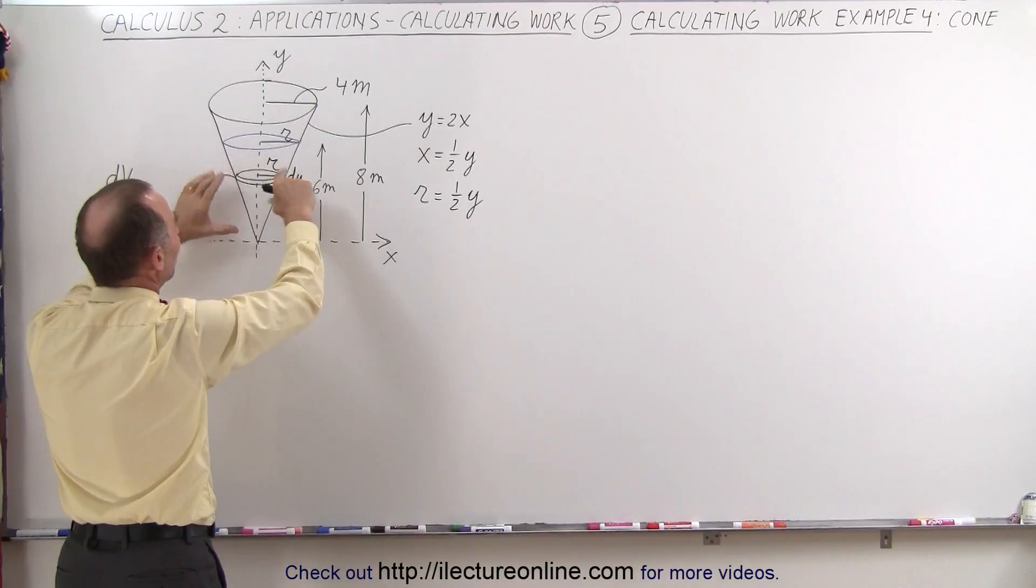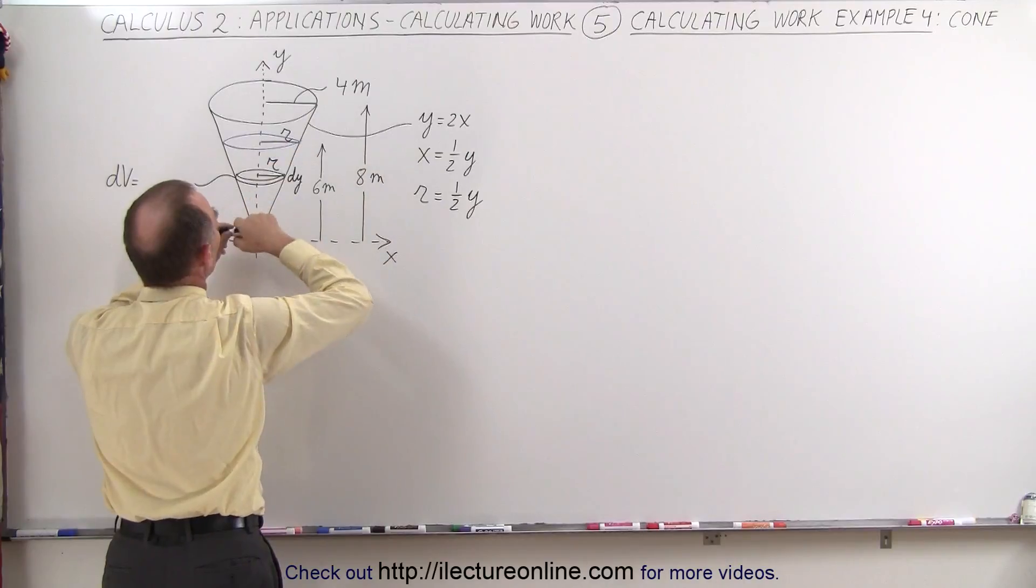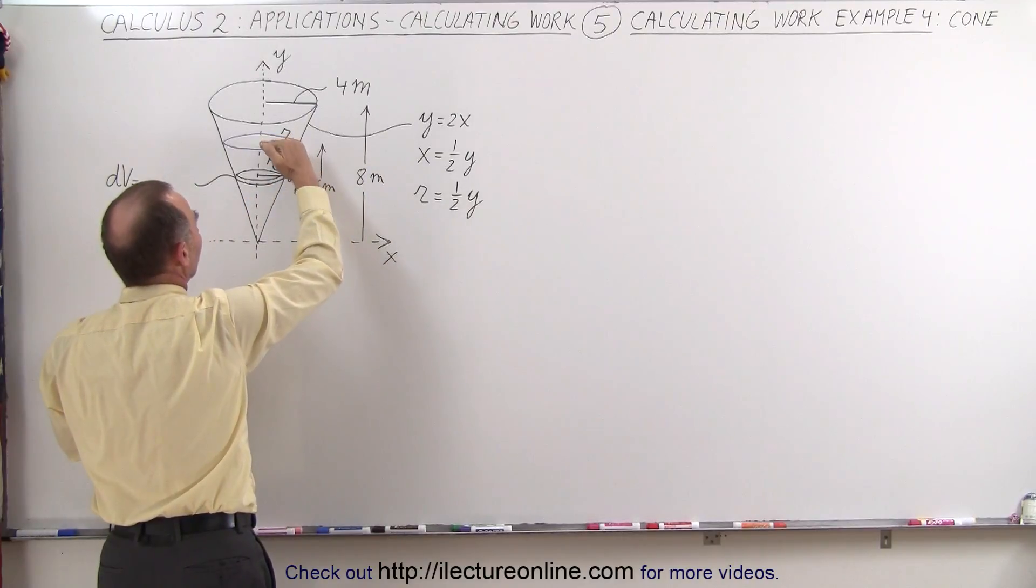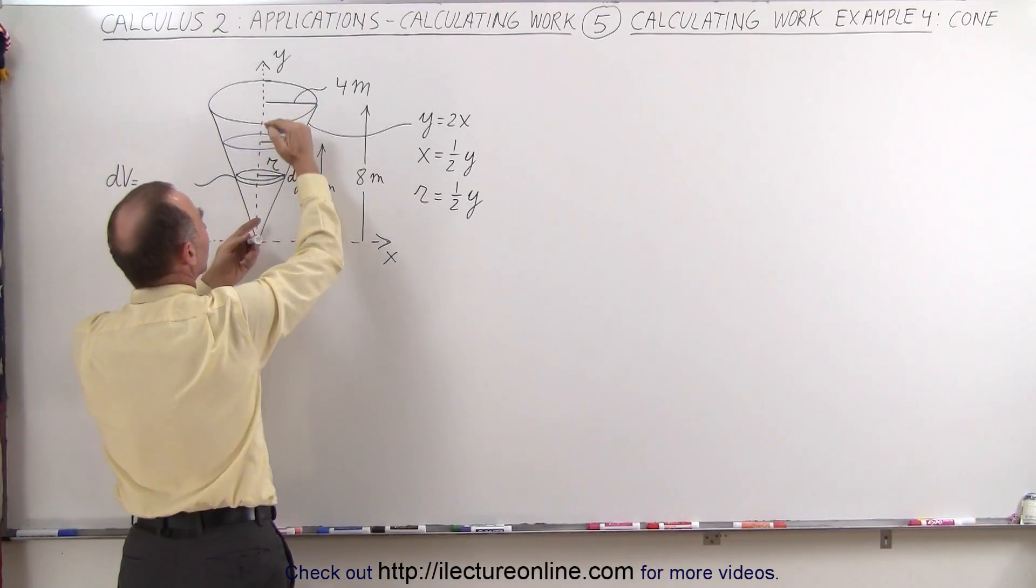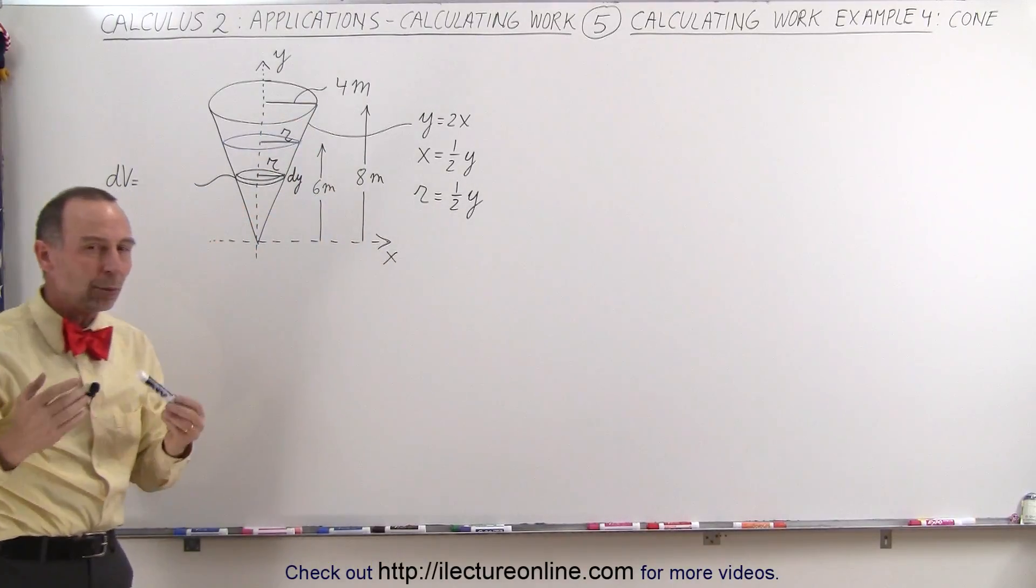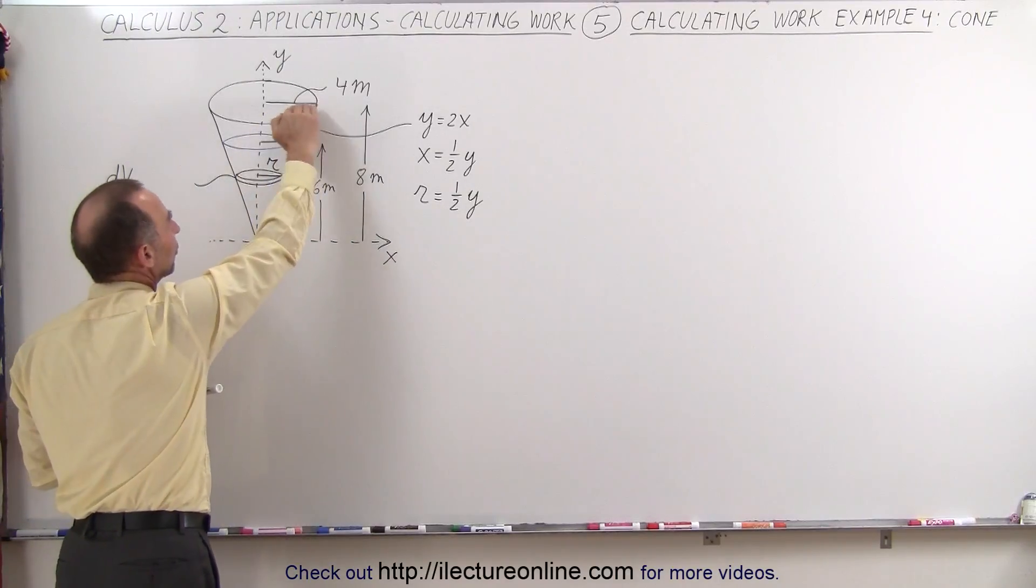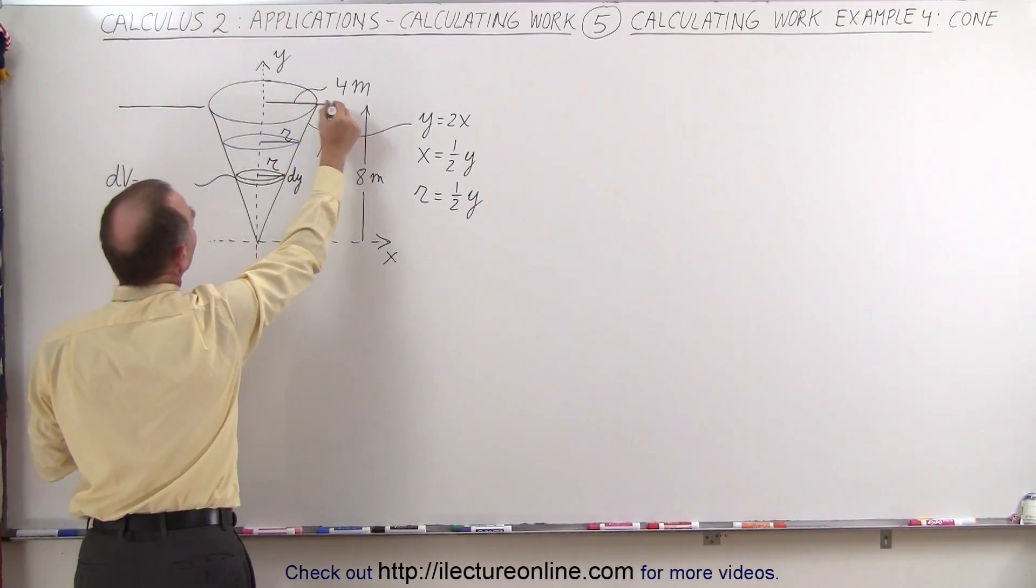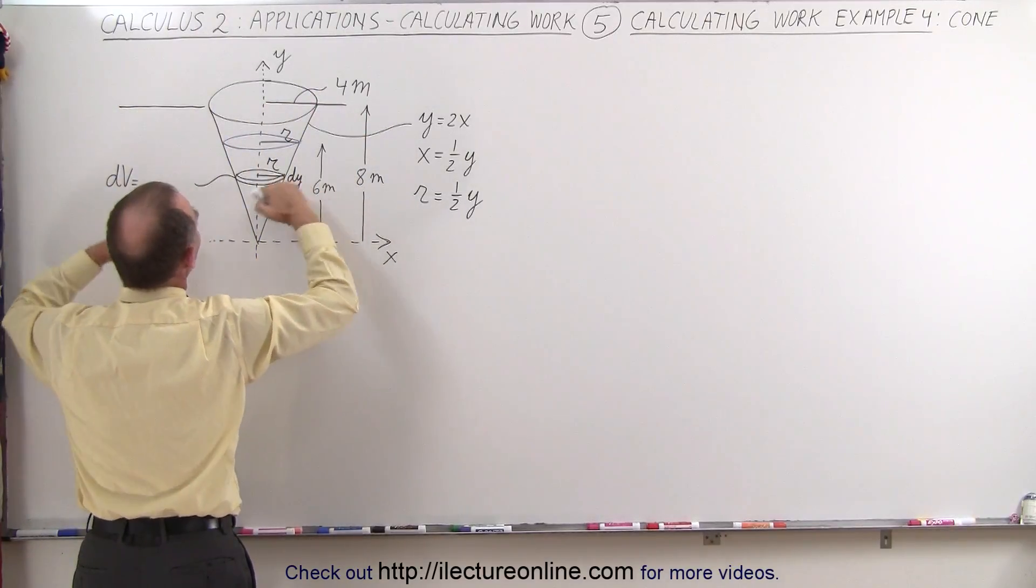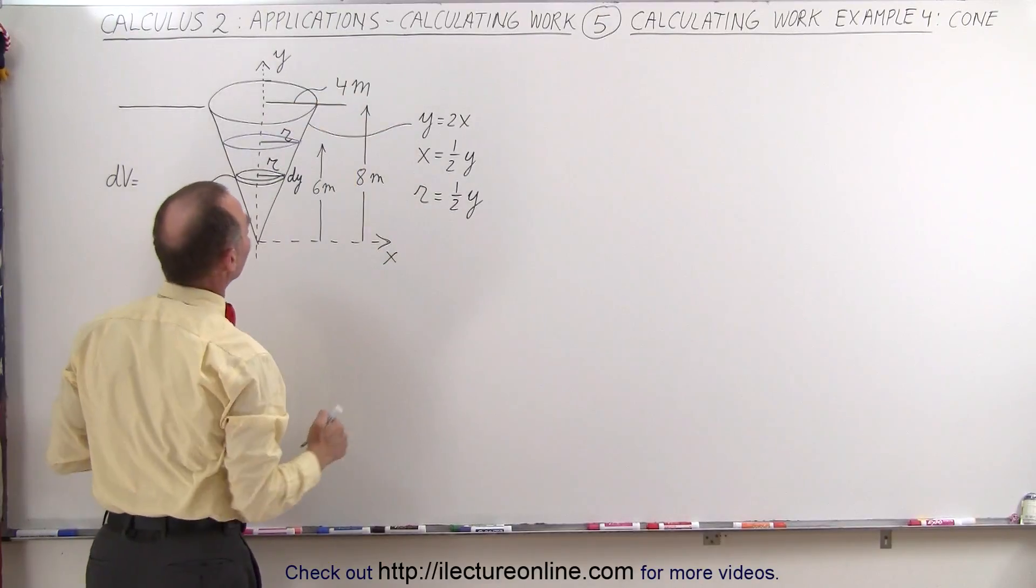So the job is to take the water in the cone here and pump it out to the level of the top of the cone. So that means that the farther down we have to go and pump the water out, the greater amount of work it will take because we have to lift it over a greater distance. So what will be the total work required to lift up all this water onto the surface area? So let's say that this is a tank that's buried beneath the floor and we want to pump the water out to the floor level.